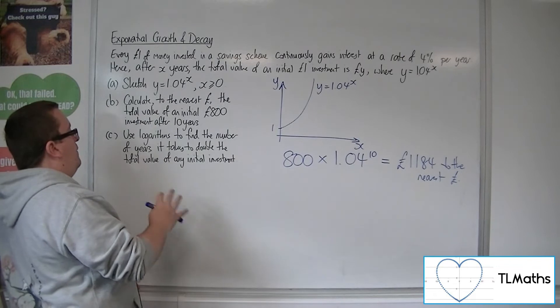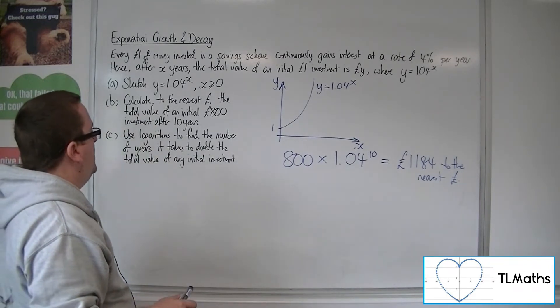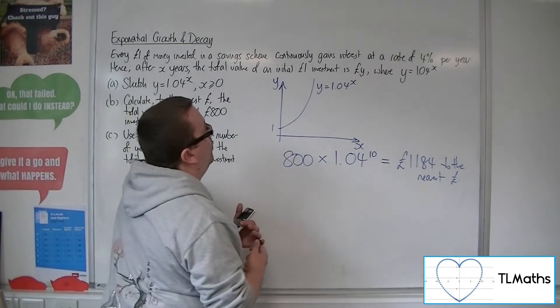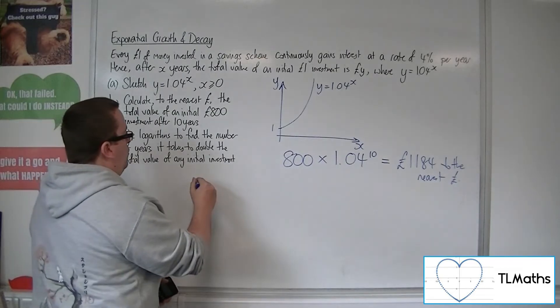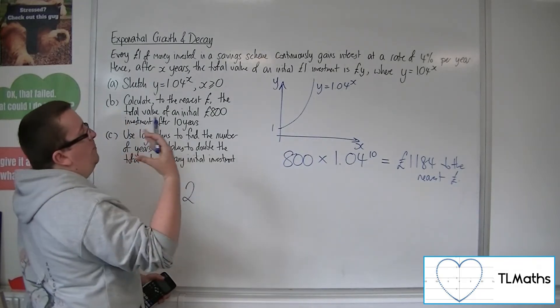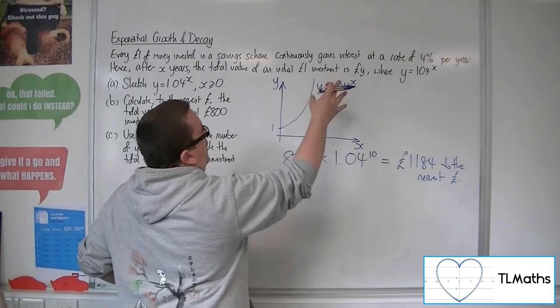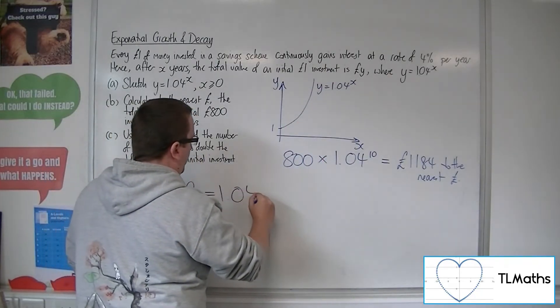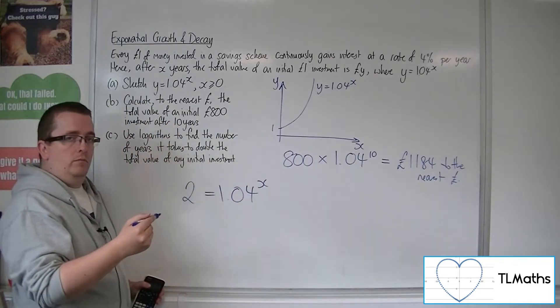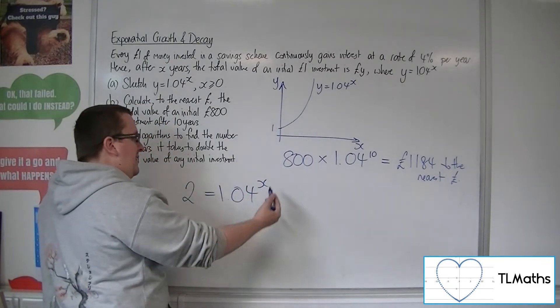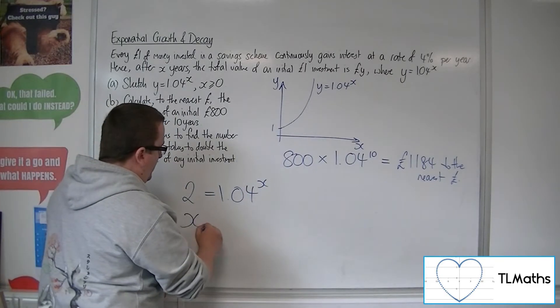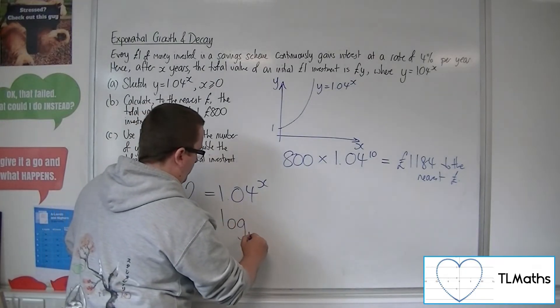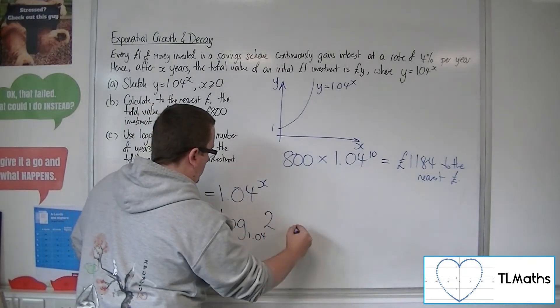Use logarithms to find the number of years it takes to double the total value of any initial investment. So what I want to know is when will y be 2? So I put £1 investment in, I want y to be 2, so I want to solve this equation. Now this is an exponential equation, which I can then write in logarithmic form, like so.